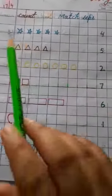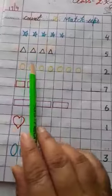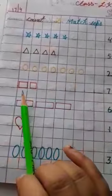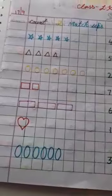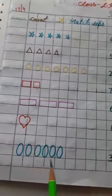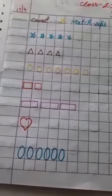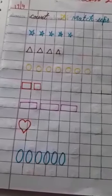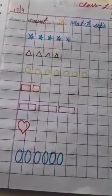I have given the shapes like stars, triangle, circle, square, rectangle, heart, and oval. The children will learn the shapes and then count them and match them.